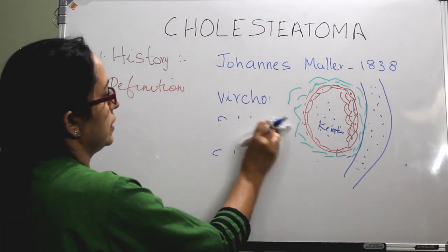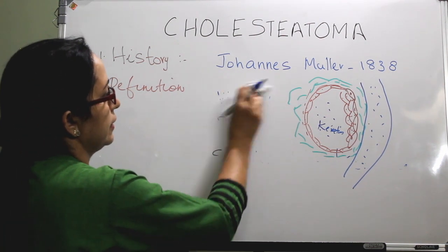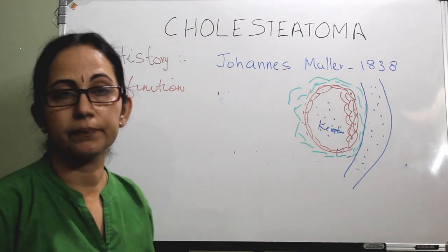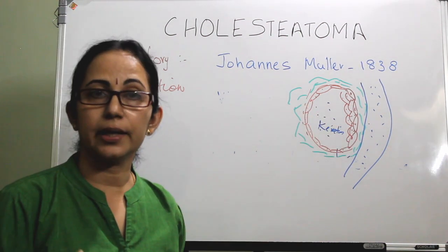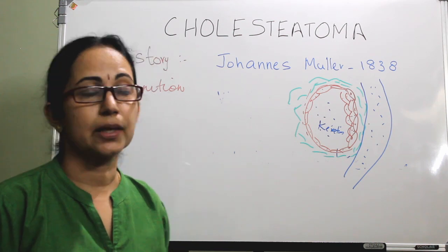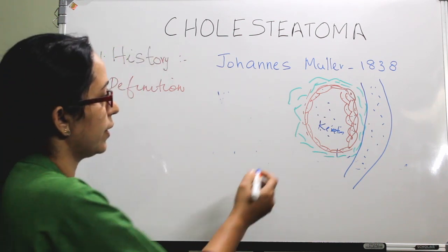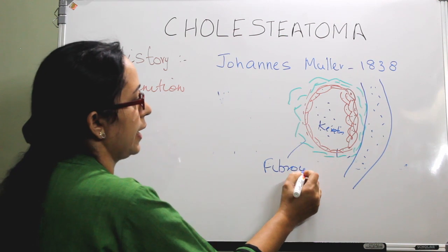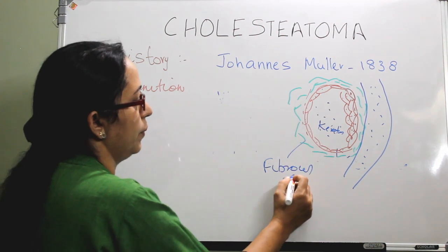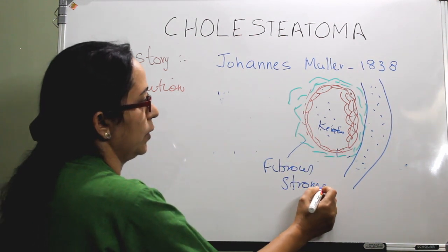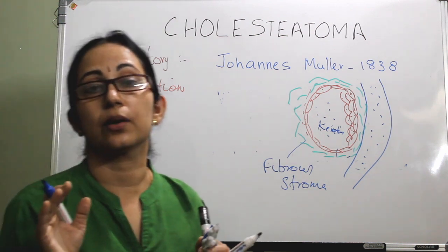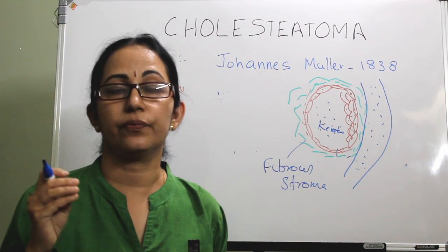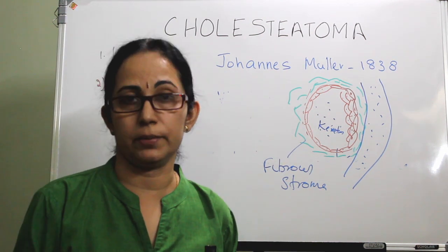So cholesteatoma is a sack lined by stratified squamous epithelium, containing keratin debris, resting on a fibrous stroma of varying thickness, and having bone-eroding properties. It is essentially a collection of stratified squamous epithelium.